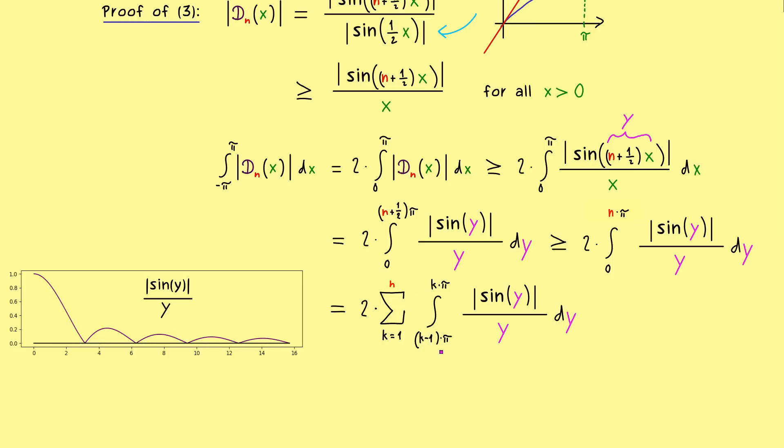Again, we can say a lot about the denominator, because it's just the function y. And in our given interval, this one is at maximum k times π. This means we get smaller or stay equal if we divide by the maximum. So with that trick, y vanishes completely from the denominator.